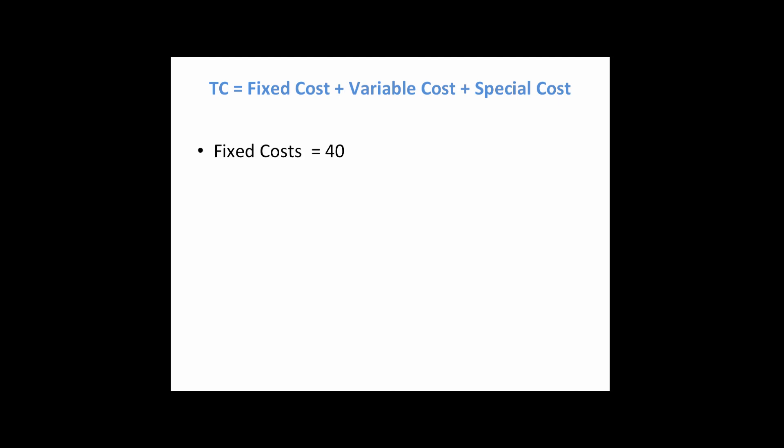Now on to getting our total cost. Again, you need to know this relationship. These formulas are not given to you in the exam, so know your total profit formula, your total revenue formula, and your total cost formula: fixed plus variable plus special costs. To recap from economics, fixed costs are not affected by the amount of output, so there is no X variable multiplied by that value. Fixed cost is 40 — it remains at 40. Variable cost, however, changes due to the amount of output or quantity produced.